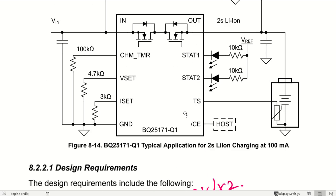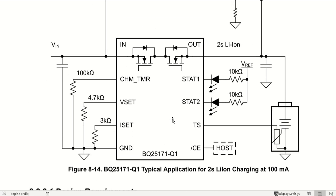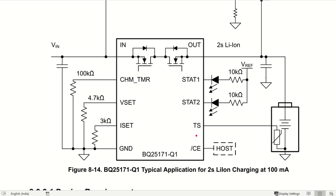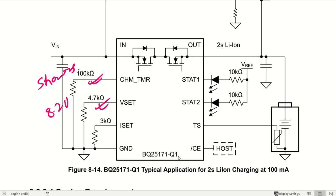This is the design requirement, and this is the complete design shown by the datasheet. Charge safety timer is set to five hours using a 100 kilo ohm resistor. Similarly, the voltage setting is set to 8.2 volt using 4.7 kilo ohm, and the I set is set to 100 milliampere using a 3 kilo ohm resistor.